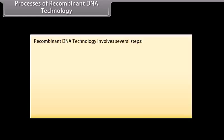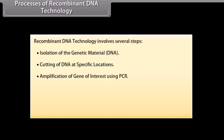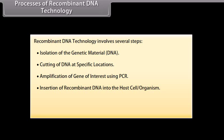Processes of recombinant DNA technology. Recombinant DNA technology involves several steps: isolation of the genetic material (DNA); cutting of DNA at specific locations; amplification of gene of interest using PCR; insertion of recombinant DNA into the host cell organism; obtaining the foreign gene product; and downstream processing.